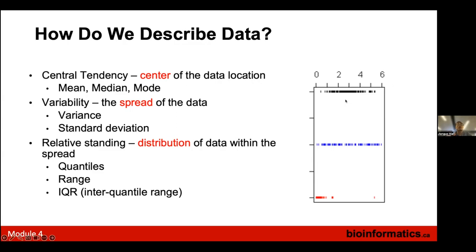Mean and variance capture the key characteristics of normally distributed data. If the distribution is more uniform, the mean is not very useful — data is not condensed to one region. Distribution matters. Most analyses assume a normal distribution; it's best to normalize data first. If data is skewed — for example left-skewed — we can do a log transformation or auto-scaling to make it more normally distributed. Visualizing data and understanding its distribution helps you choose the right normalization algorithm.